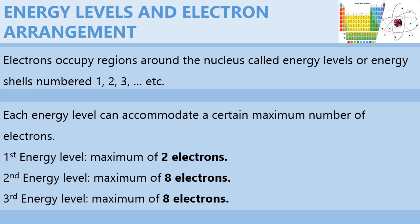Each energy level can accommodate a certain maximum number of electrons. The first energy level can hold a maximum of 2 electrons, the second can hold a maximum of 8, and the third can hold a maximum of 8 as well.